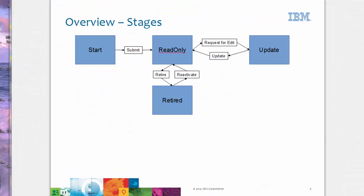I created this diagram to help picture what this form is doing. We start in the Start stage; when the user clicks Submit it moves to the Read-Only stage, where we can click the Request for Edit button which moves the form into the Update stage. Once in the Update stage we can click the Update button which moves the form back to the Read-Only stage. When we are in the Read-Only stage we can choose to retire the record, which moves it into the Retired stage. A record in the Retired stage can be reactivated and sent back to the Read-Only stage.